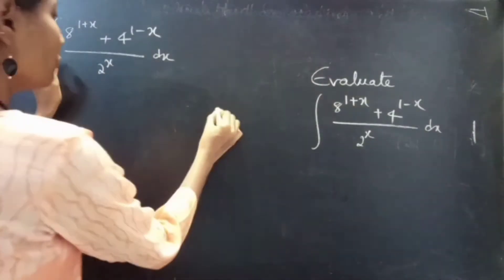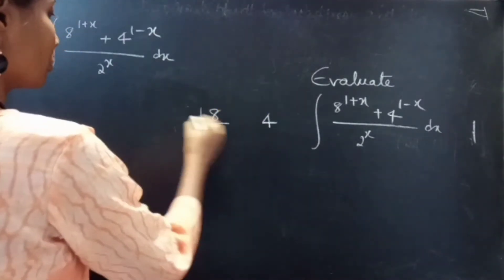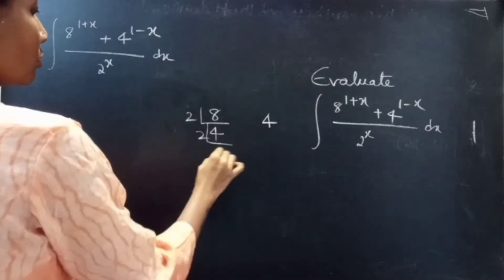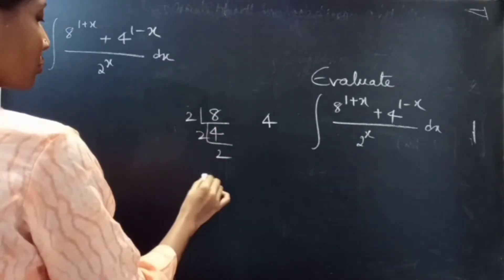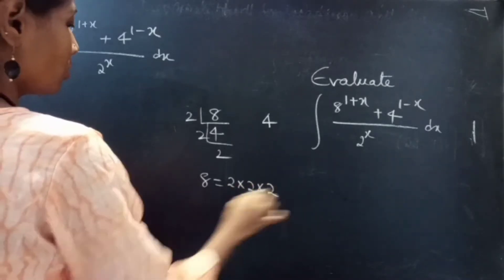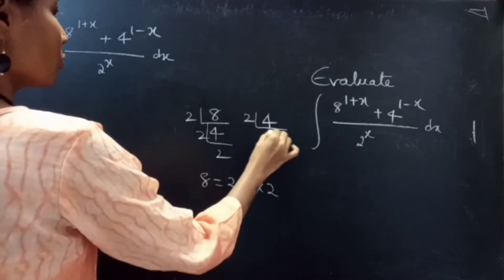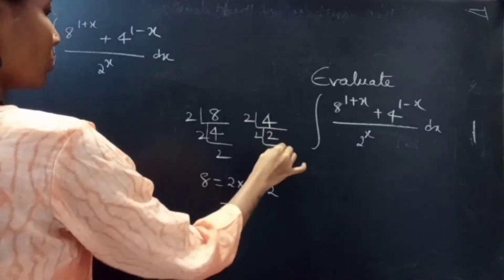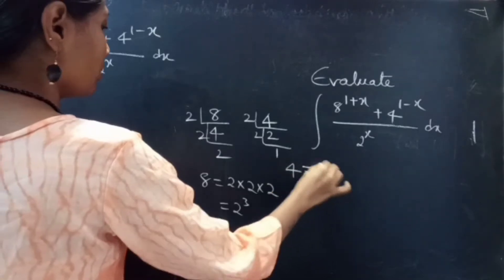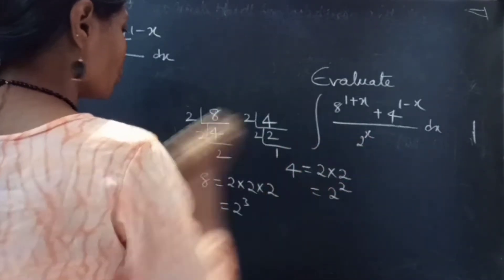We will find the factors of 8 and 4. Two 4's are 8, two 2's are 4. So 8 equals 2 × 2 × 2, which equals 2 cubed. And 4 can be written as 2 × 2, which equals 2 squared.